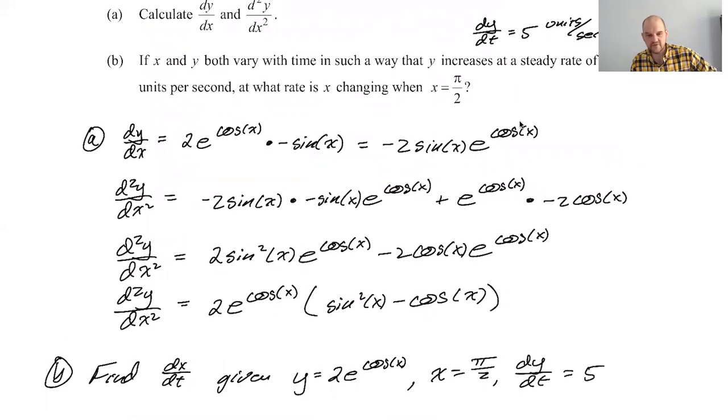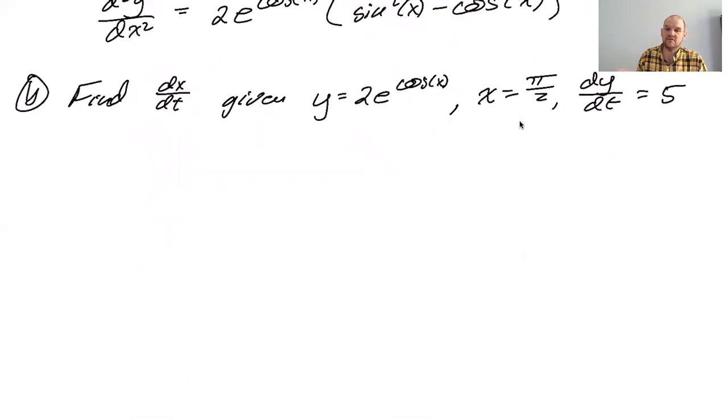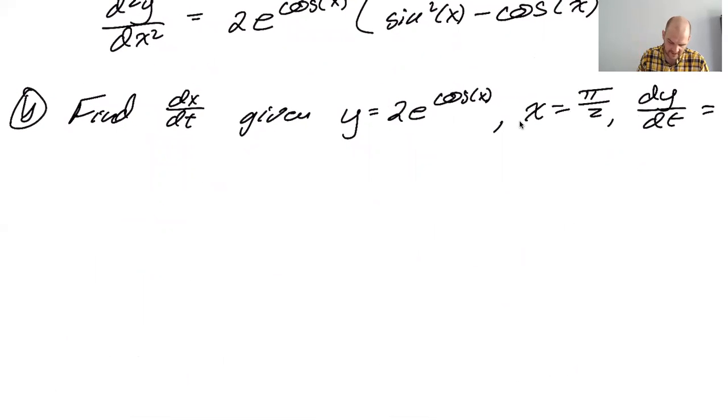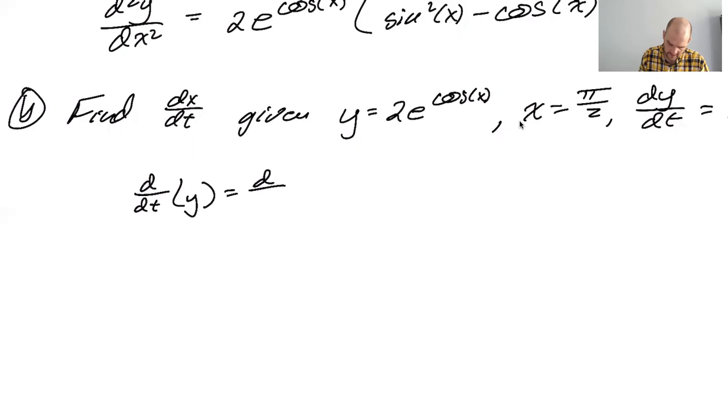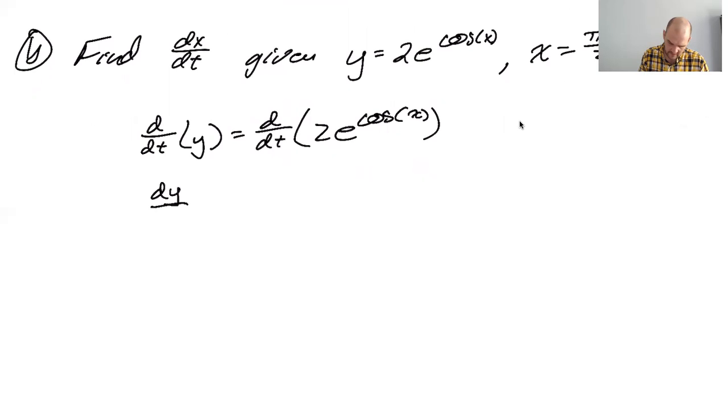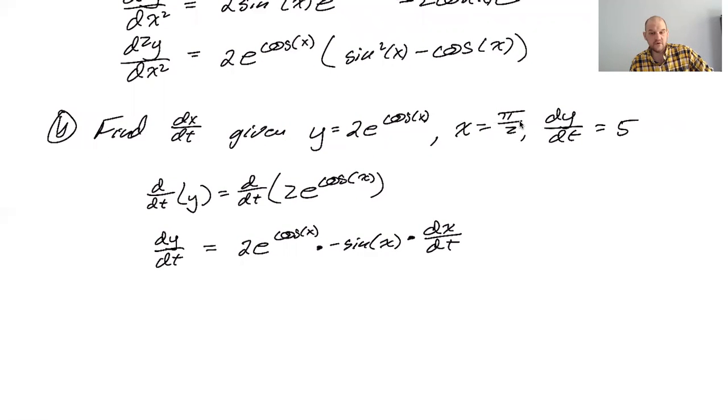I think there's a couple ways you can do this. I'm going to do it the way that I think I would—I would find the derivative with respect to time of the whole thing. So I'm going to pretend I never did part A. I'm just going to say d/dt of y is equal to d/dt of 2 e to the cosine of x. So it's going to be dy/dt is equal to 2 e to the cosine of x times the negative sine of x times dx/dt.